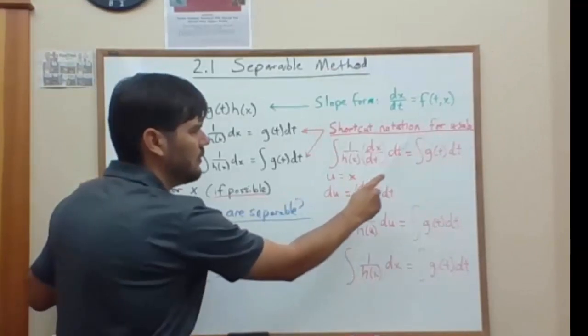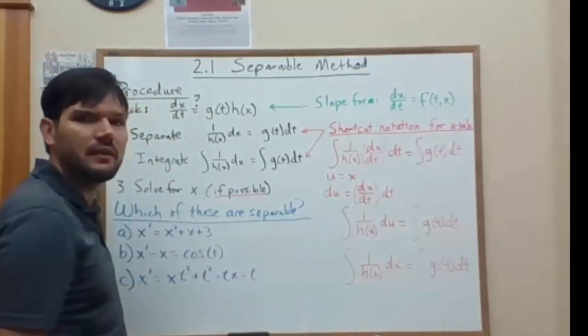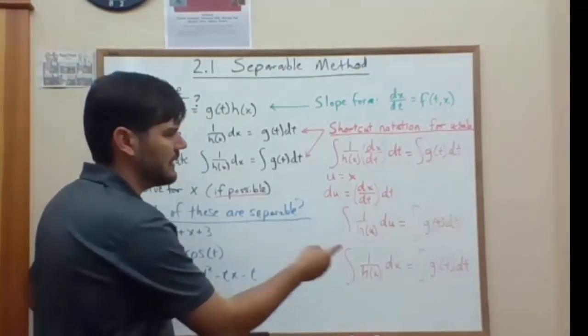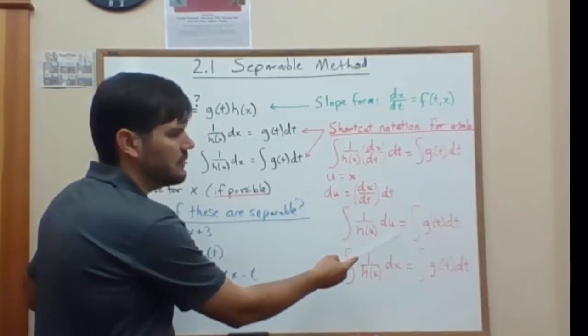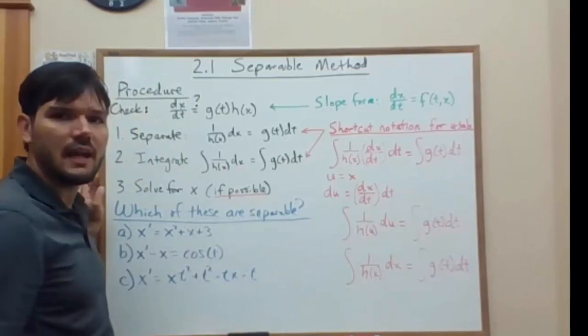So you take that whole section and replace it with du, and we get the integral of one over h of u times du. Well, since we used u equals x,